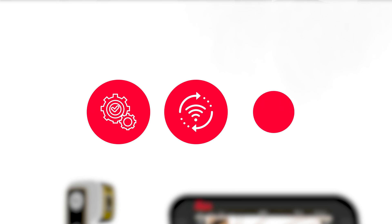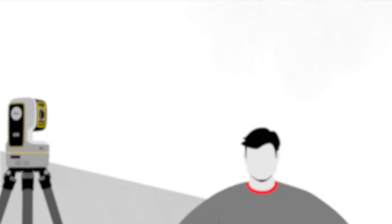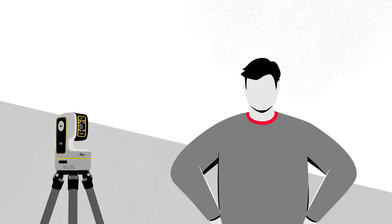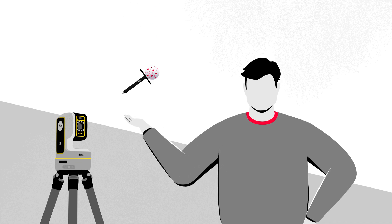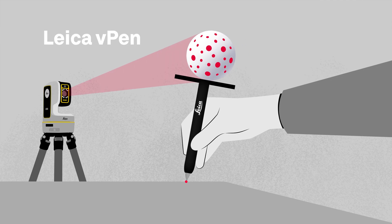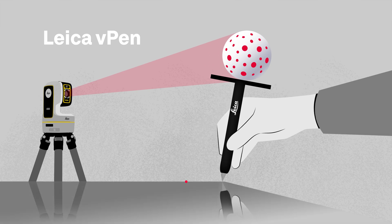Get even more productive with Leica Icon ICS50 in combination with the unique wireless Leica V-Pen for capturing contours on any material, even glass.